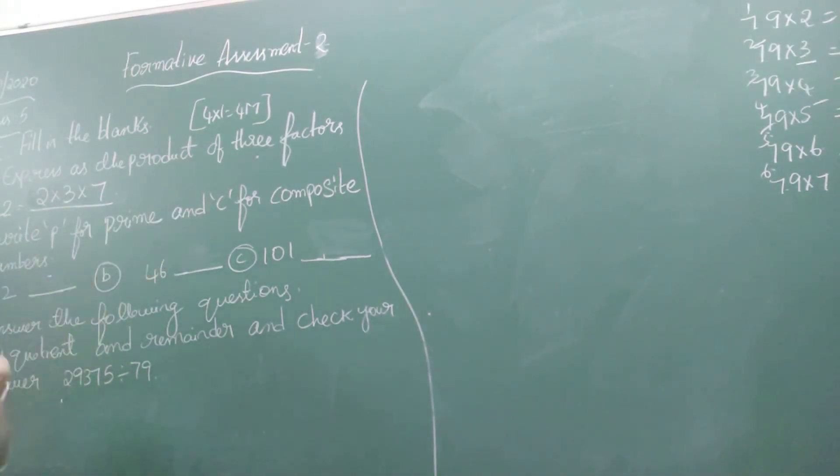Write P for prime and C for composite numbers. So here we need to write the given numbers which are prime or composite. Prime numbers have only one and itself as factors. What is a composite number? For a composite number we have more than two factors.